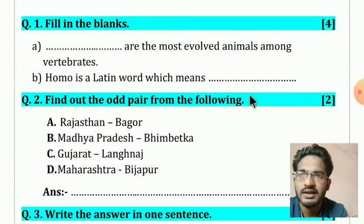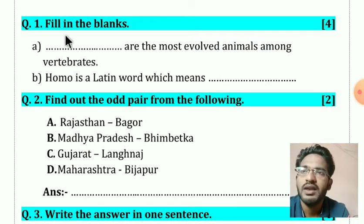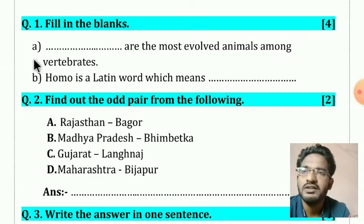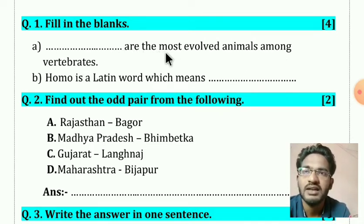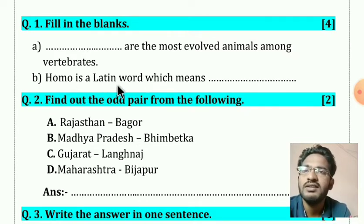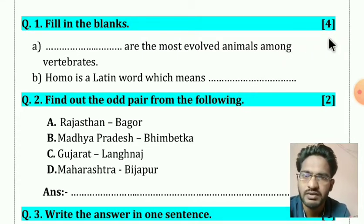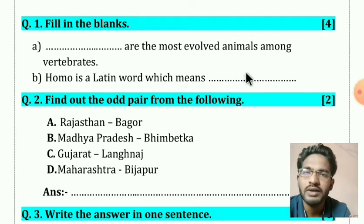Question number one: fill in the blanks, for four marks. First one — 'Die ___ are the most evolved animals among vertebrates.' Second — 'Homo is a Latin word which means ___.' Options are not given, so you have to write the answers on your own. Two marks are given for each question.